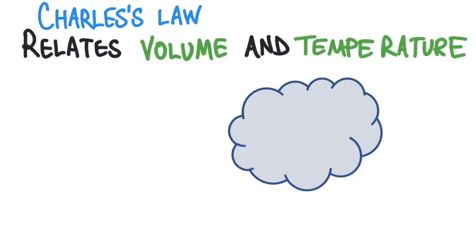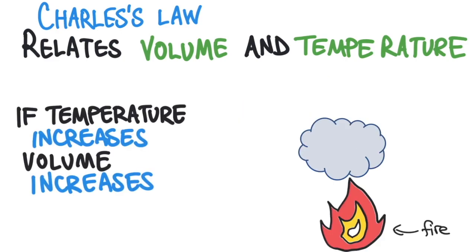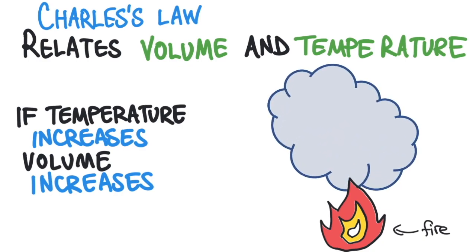Charles' Law describes the relationship between the temperature and volume of a gas when the pressure is held constant. Using words, Charles' Law can be described like this. If the temperature of a gas increases, the volume of the gas will increase.